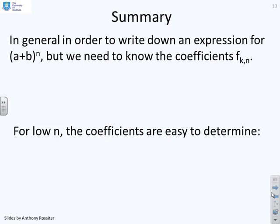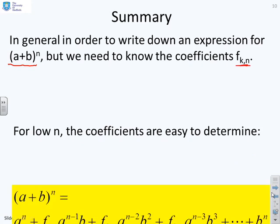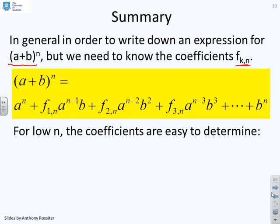So in summary, in order to write down an expression for A plus B to the power n, we need to find the coefficients of the different terms. And so we've found this coefficient of A to the n is 1, we've got a coefficient I've called F1n - n because the power is n, and the 1 because I'm doing A to the n minus 1 times B. And then I've got a coefficient F2n, the 2 because I've got A to the n minus 2 times B squared, and the n again because it's A plus B to the n. And then we've got F3n, and you'll see that's A to the n minus 3 times B cubed, and so on.